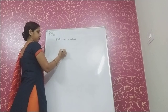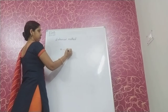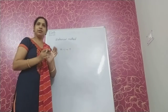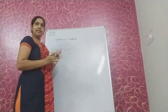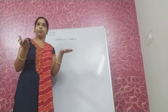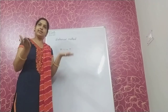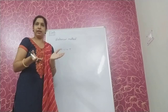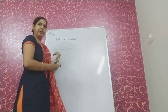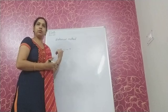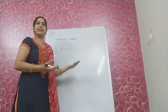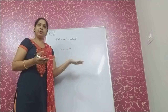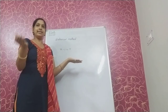Suppose we have given equation x minus 1 equal to 7. We have to solve this equation just by balancing them. If we have to add a number to the left side, then we will add the same number to the right side as well.